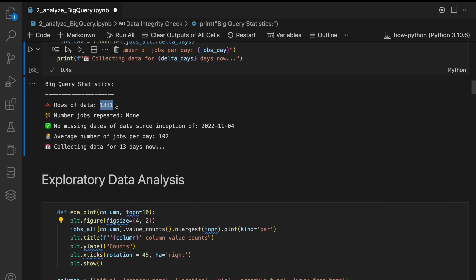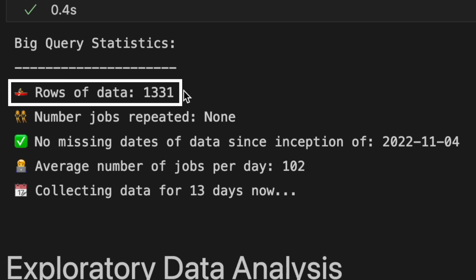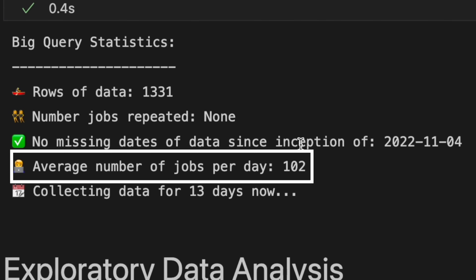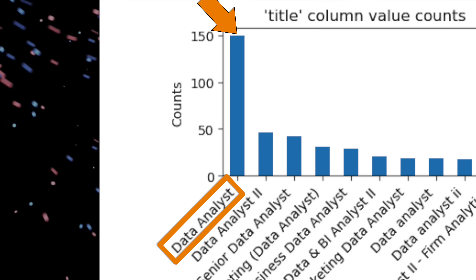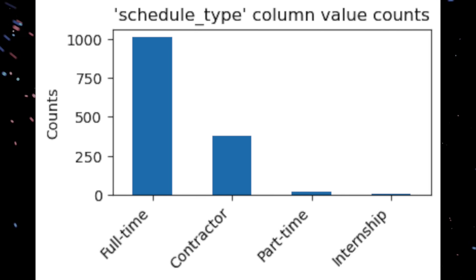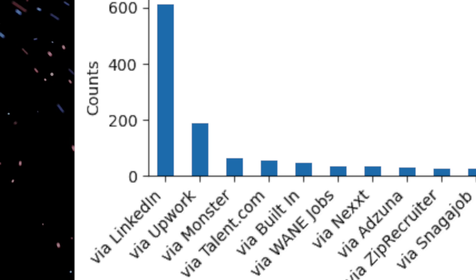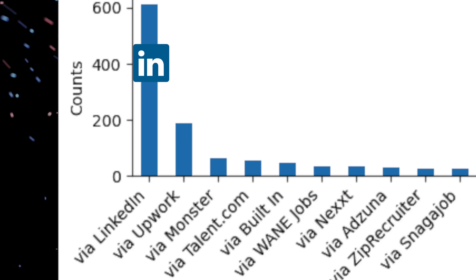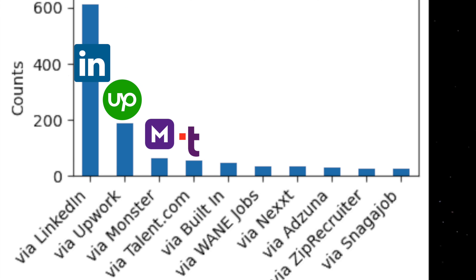Let's move into the EDA — exploratory data analysis. Looking at some basic statistics, we've collected around 1,300 jobs already and are averaging about 100 jobs a day. Visualizing the different columns, data analyst is one of the most frequent job titles, there are mostly full-time jobs with some contractor roles, and most of the jobs are coming from LinkedIn, but also Upwork, Monster, and Talent.